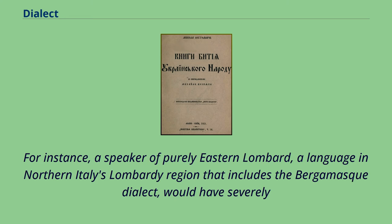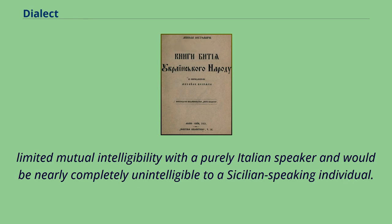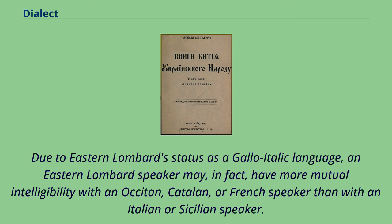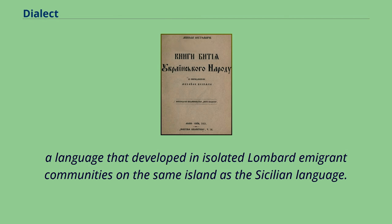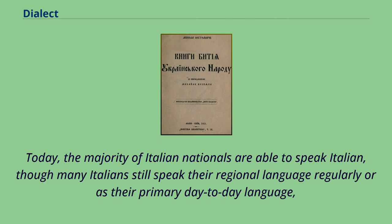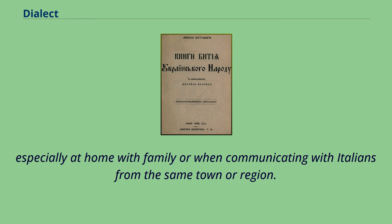For instance, a speaker of purely Eastern Lombard — a language in northern Italy's Lombardy region that includes the Bergamasque dialect — would have severely limited mutual intelligibility with a purely Italian speaker and would be nearly completely unintelligible to a Sicilian-speaking individual. Due to Eastern Lombard's status as a Gallo-Italic language, an Eastern Lombard speaker may in fact have more mutual intelligibility with an Occitan, Catalan, or French speaker than with an Italian or Sicilian speaker. Today, the majority of Italian nationals are able to speak Italian, though many Italians still speak their regional language regularly, especially at home or when communicating with Italians from the same town or region.